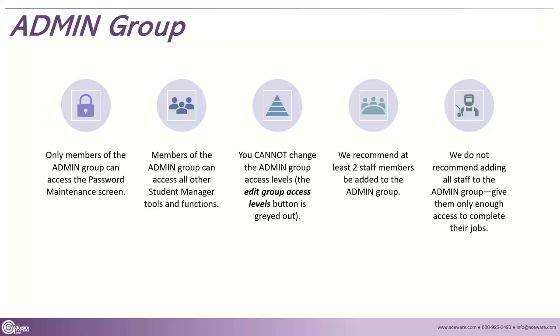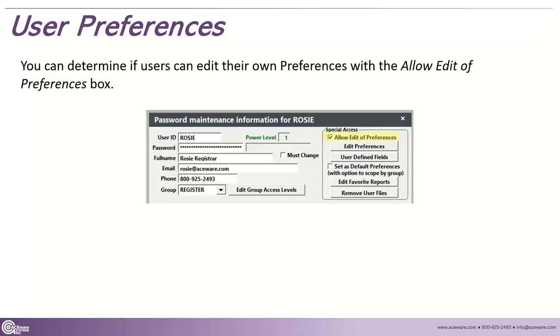That's the overview of how we set up a user, set their access, and things like that. Moving on to user preferences — preferences are fantastic, and we actually have at least one webinar looking at just preferences. If I'm an individual user, I might be able to edit my preferences, and I can go in and say, 'I really want this field to use this label,' or 'I don't want to have to see this field,' things like that.